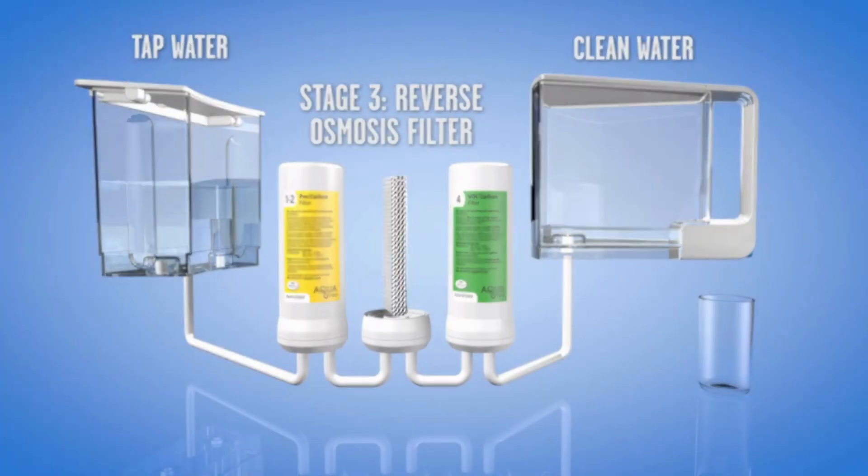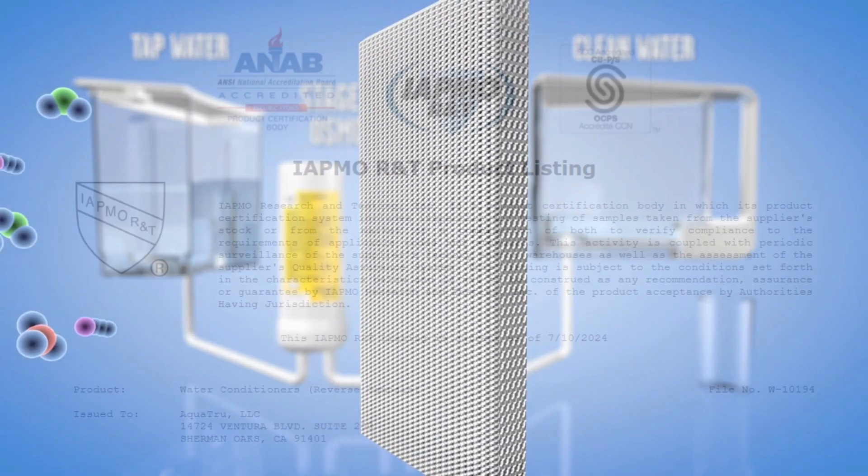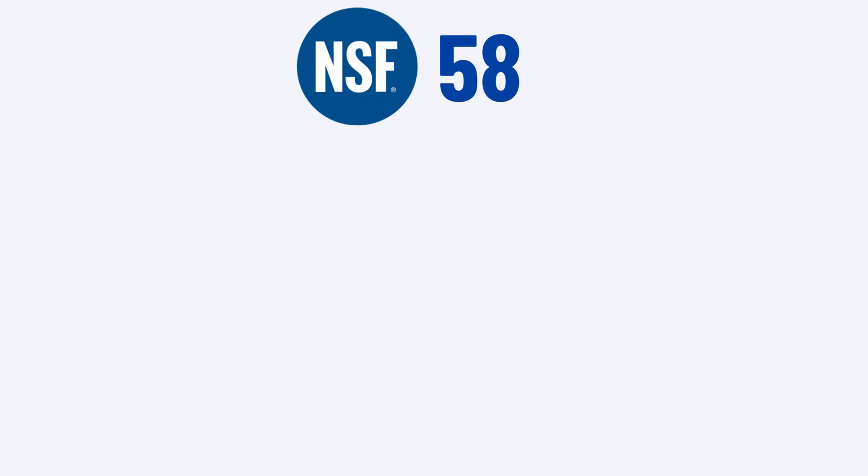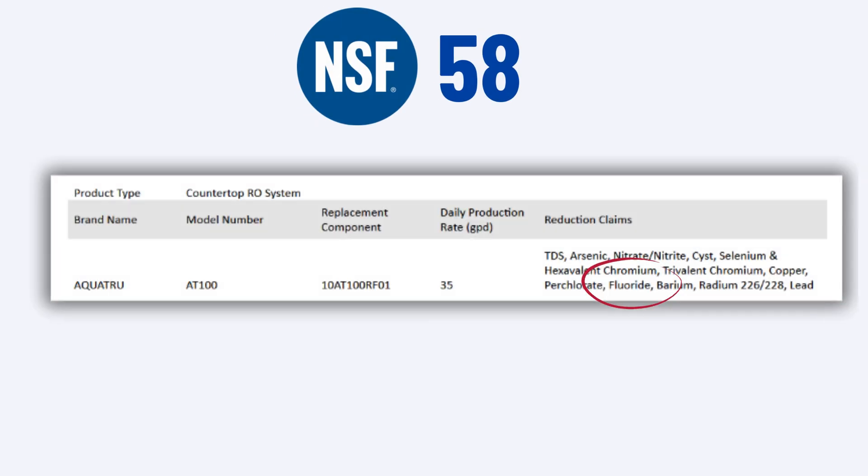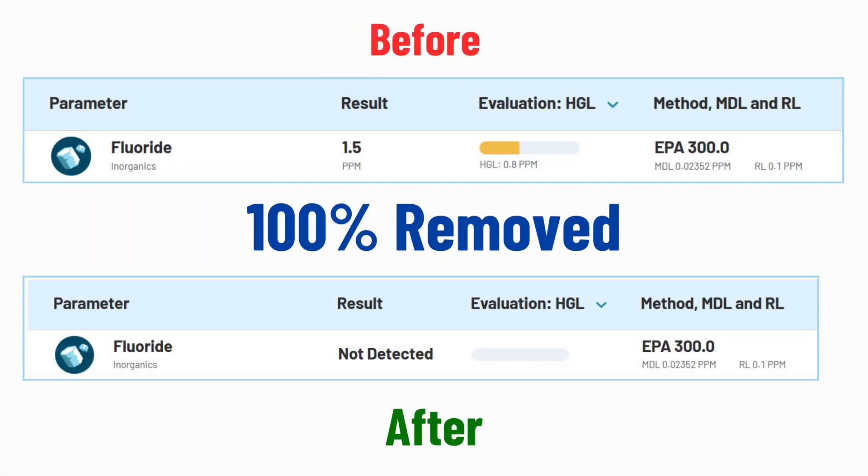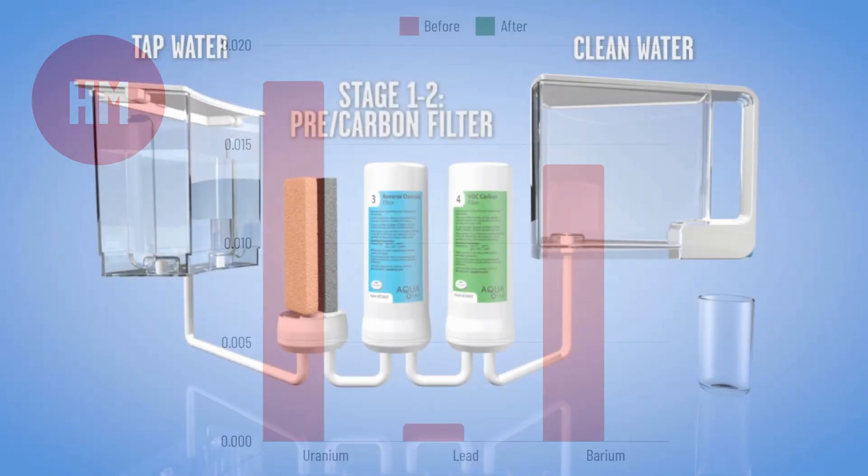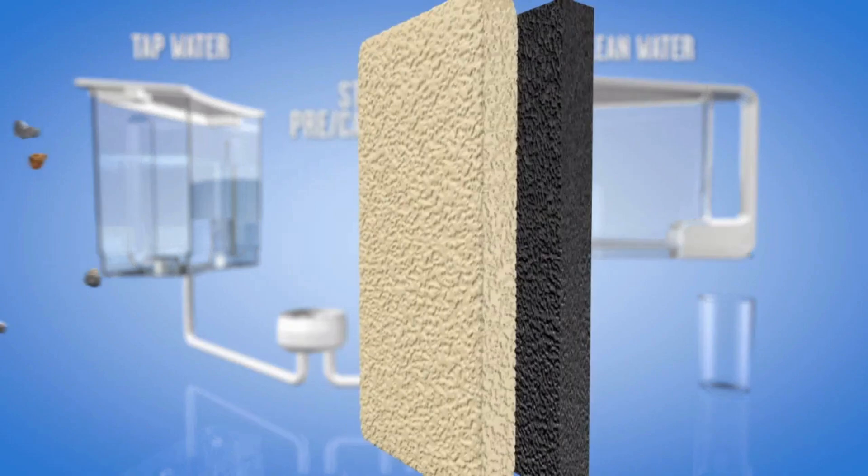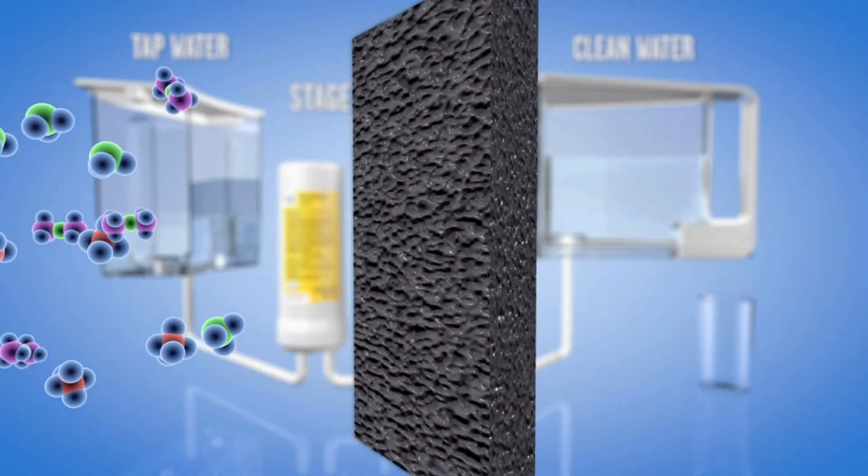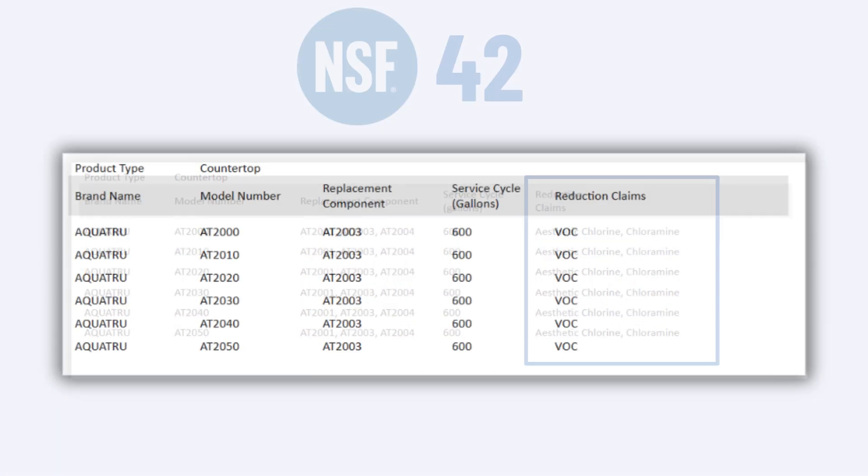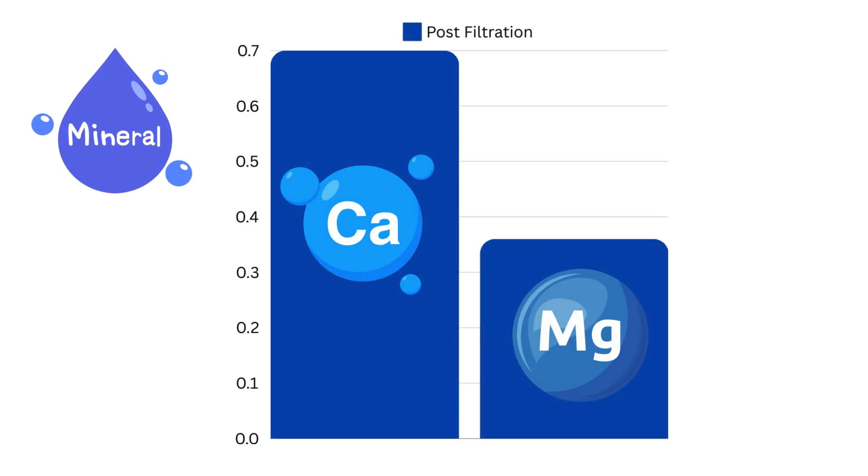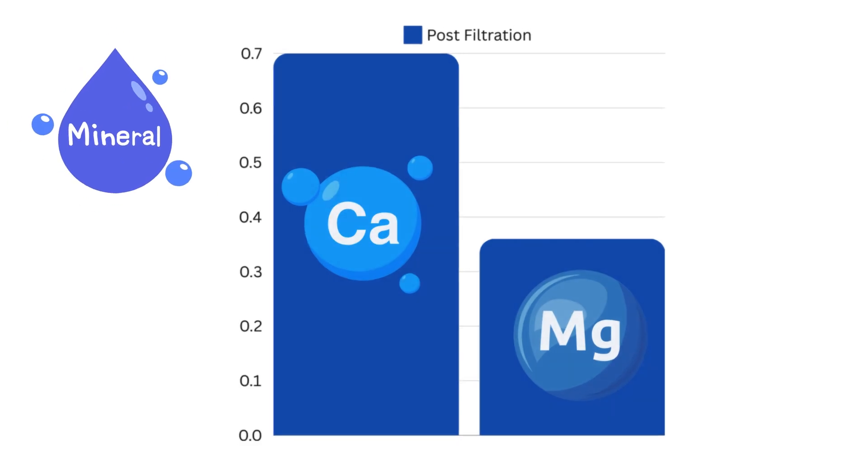Aquatru is a reverse osmosis countertop filtration system certified by IAPMO against NSF Standard 58 for reducing 100% fluoride, as confirmed by independent test reports, along with other contaminants like lead and uranium. It uses two activated carbon filters in addition to RO to remove chlorine and dangerous VOCs like chloroform, and its remineralizing filters add essential minerals like magnesium.